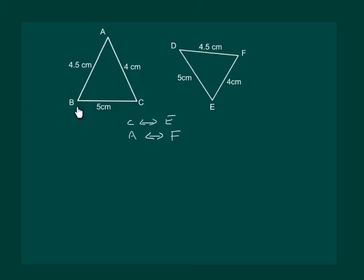Similarly, B should correspond to D. And now we are in a position to write that triangle ABC is congruent to triangle—A corresponds to F, so F; B corresponds to D, so D; and C corresponds to E. So triangle FDE.